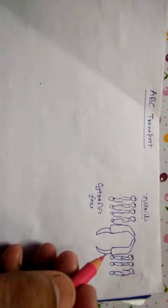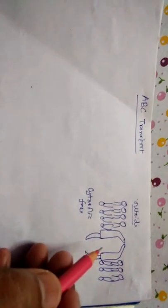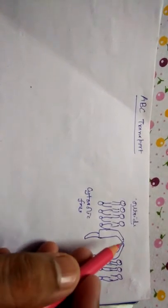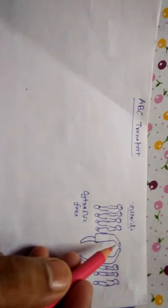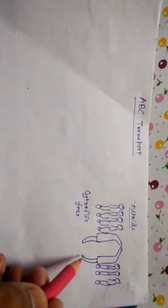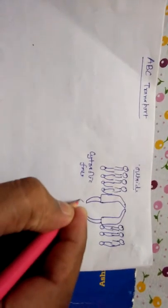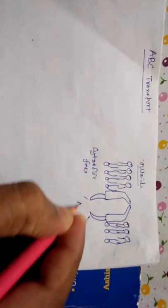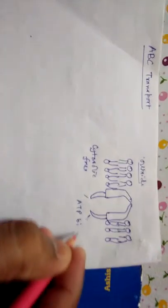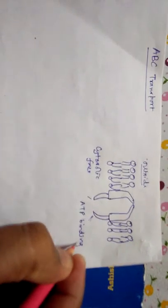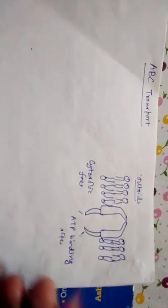As the name suggests, it uses ATP. This is the structure of the biological membrane. ABC transporters possess two transmembrane domains and two sites where ATP can bind. These two regions are the ATP binding sites, and that is why they are known as ABC Transporters.